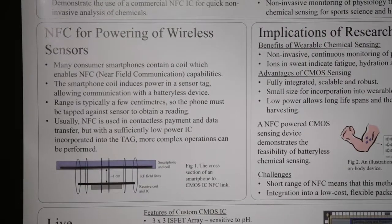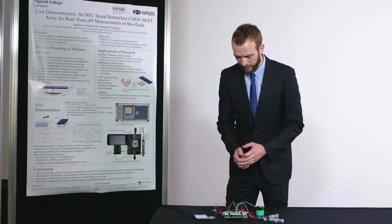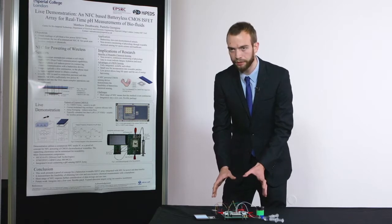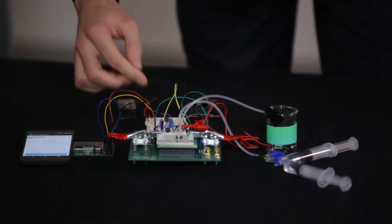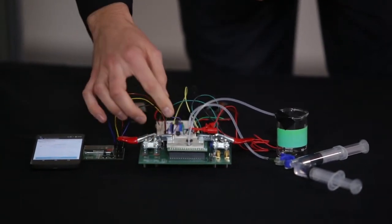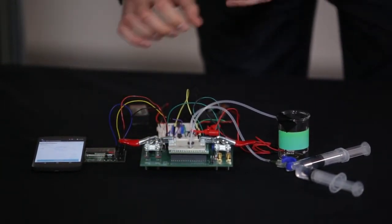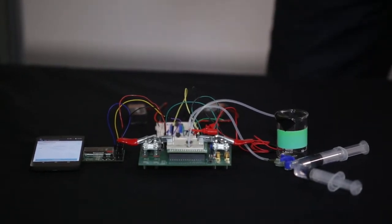The demonstration is a bench-top setup of the principle. We have our chemically sensitive ASIC on the top here underneath a flow cell, which allows us to place a pH solution onto the sensing surface to represent sweat. As you exercise and become dehydrated, the pH of your sweat changes. So sensing pH is a nice introduction to looking at the properties of sweat on the body.